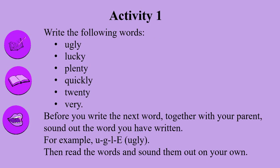Activity 1: Write the following words — ugly, lucky, plenty, quickly, twenty, very. Before you write the next word, sound out the word with your parent that you have written.